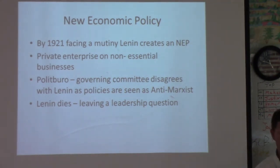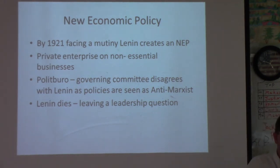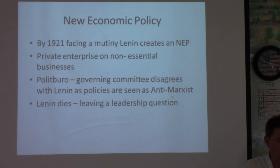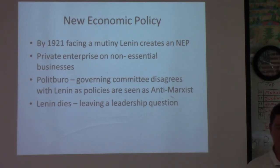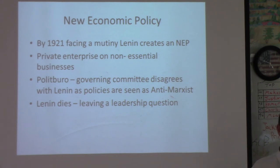Unfortunately, before these things could take root, Vladimir Lenin died in 1924. Before his plans could be realized — and this was a terrible thing for the people of Russia — his death created a power vacuum between his longtime friend Leon Trotsky and Joseph Stalin. Lenin would say neither man was ready for the job: Stalin was a brute thug, and Trotsky just had tunnel vision.